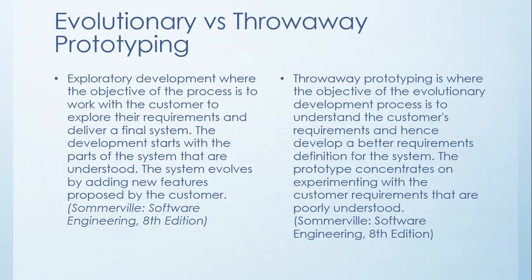There are two types of prototyping: evolutionary and throwaway. Evolutionary prototyping is a lifecycle model in which you develop a system concept as you move through the project. You begin by developing the most visible aspects of the system, demonstrate that part to the customer, and then continue to develop the prototype based on the feedback you receive.